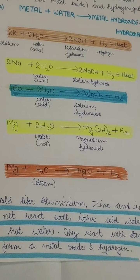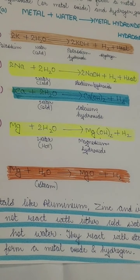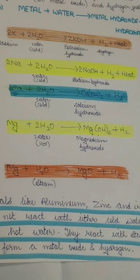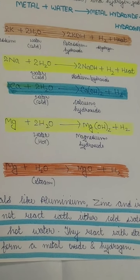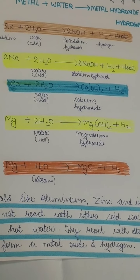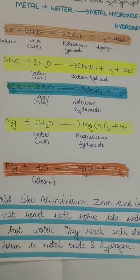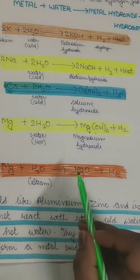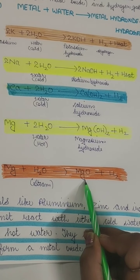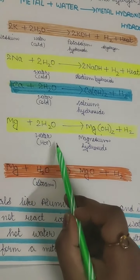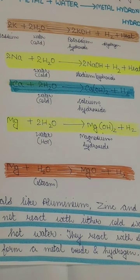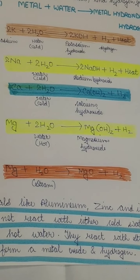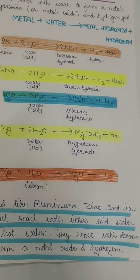Magnesium also reacts with steam. Magnesium does not react with cold water, but it reacts with hot water and also with steam. Here is an important point to note: magnesium when reacting with hot water produces magnesium hydroxide. But the same magnesium when reacting with steam produces only magnesium oxide — not magnesium hydroxide — along with hydrogen gas. So when it reacts with hot water it gives Mg(OH)₂, but when it reacts with steam it gives MgO and H₂. This you have to remember.